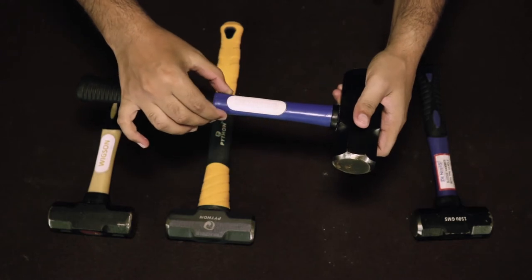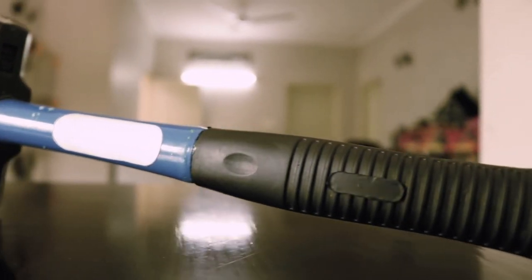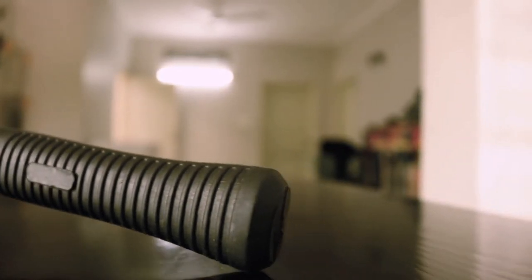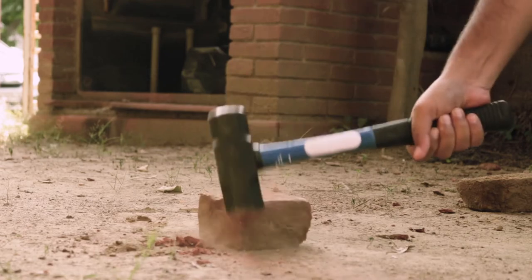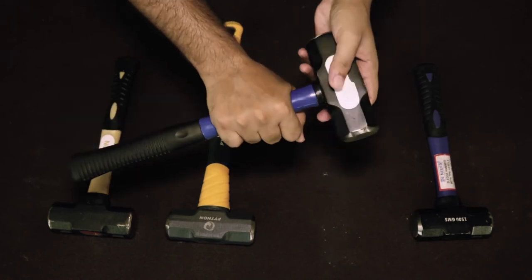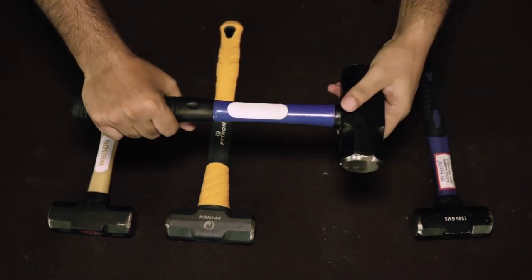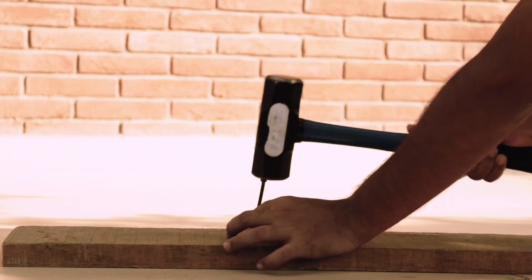This handle is made from fiberglass. As you can see, this handle is very thin. What happens is that when you swing and hit your target, the handle to head weight ratio is not good, and your swing is not accurate. When I swing it at the target, I missed it many times.